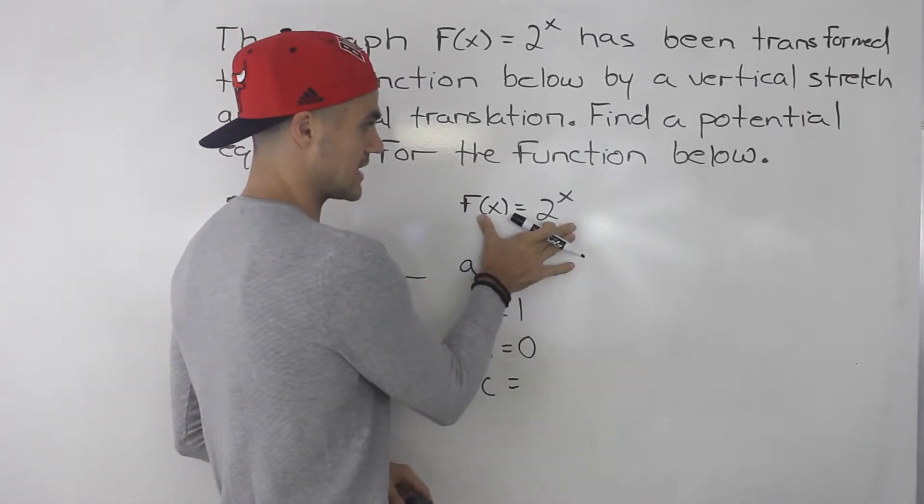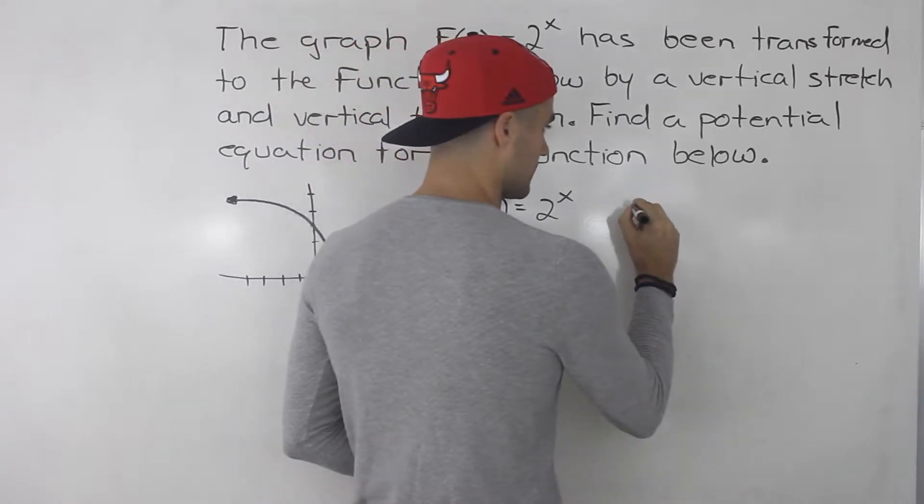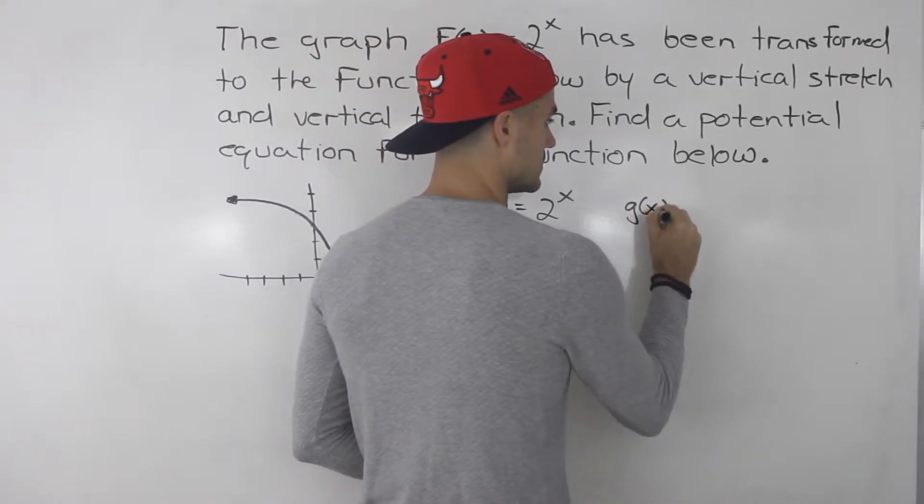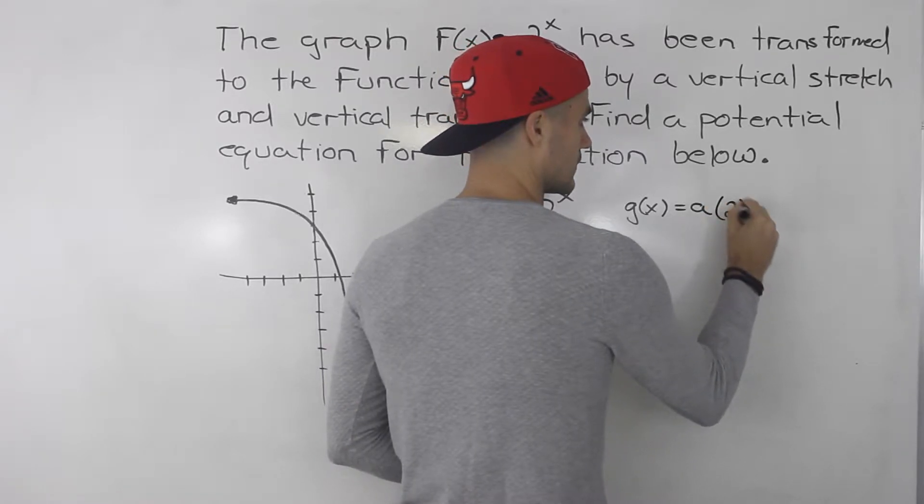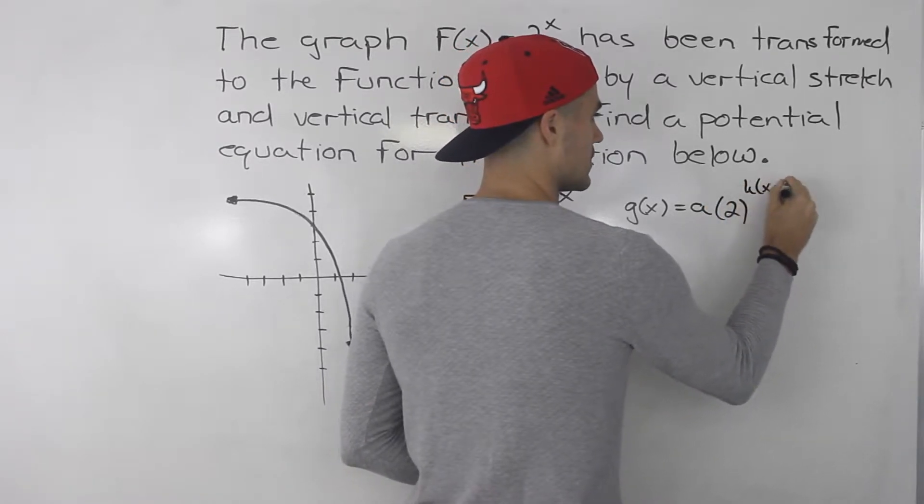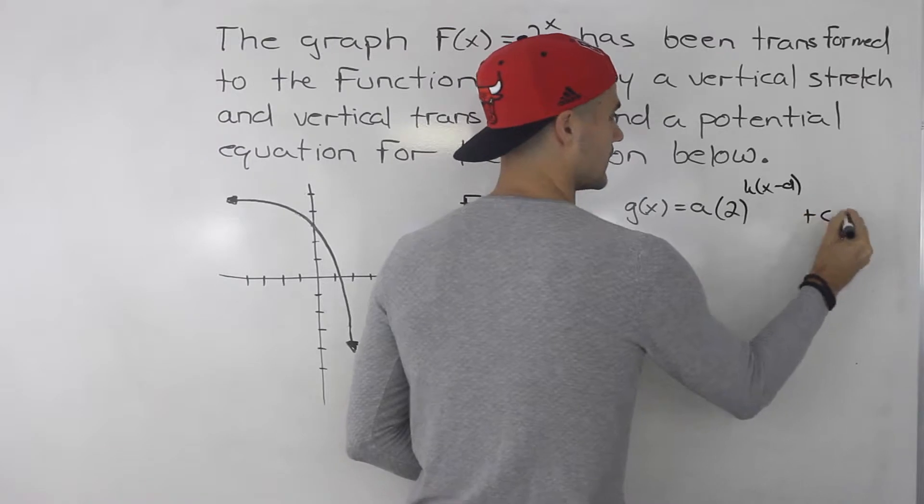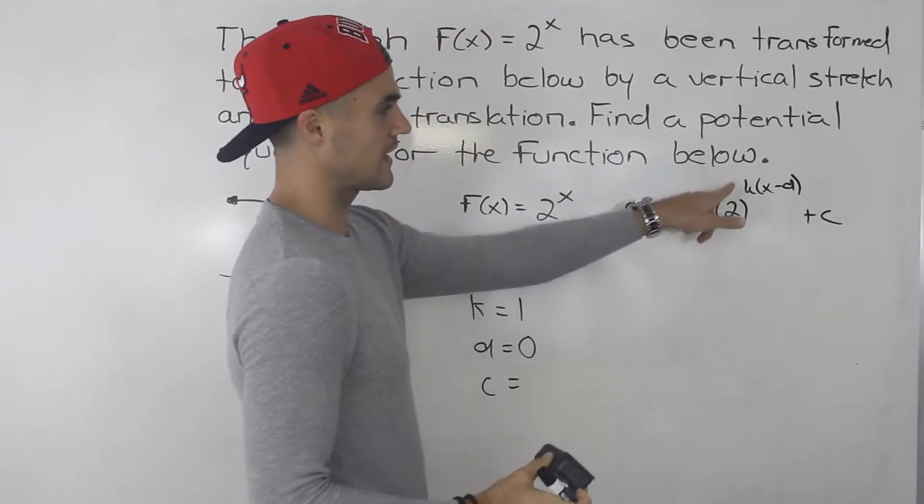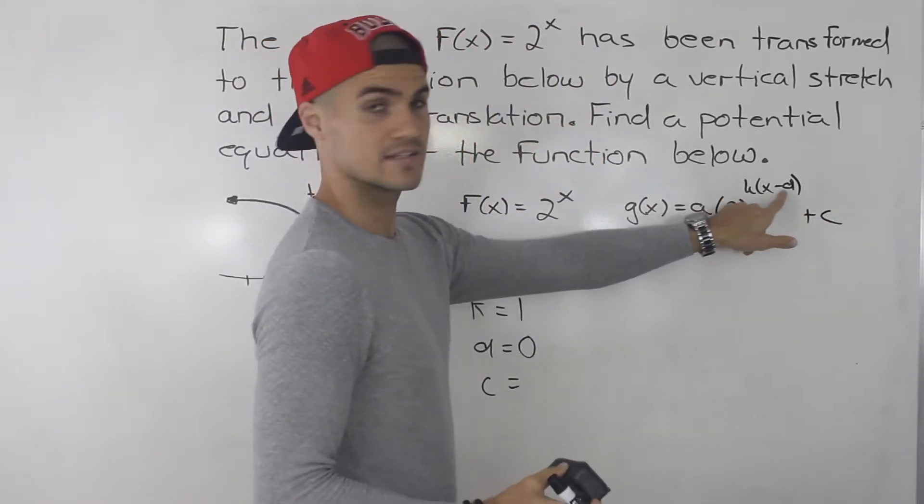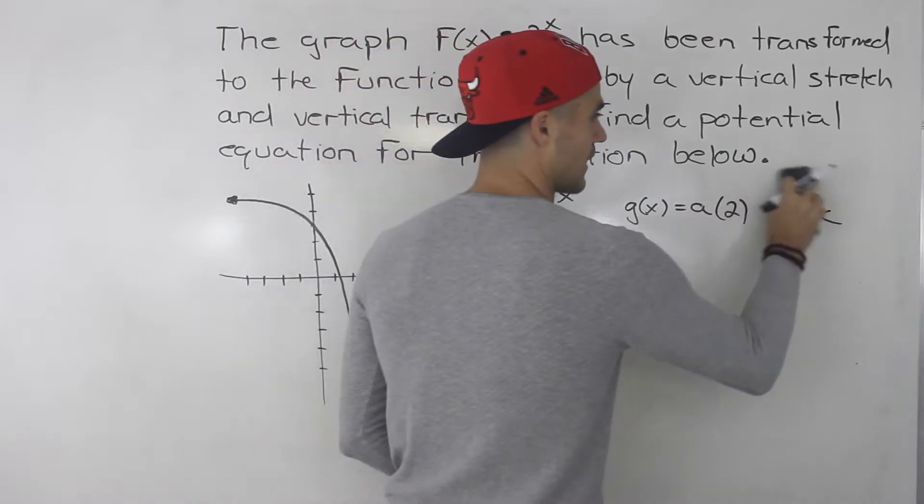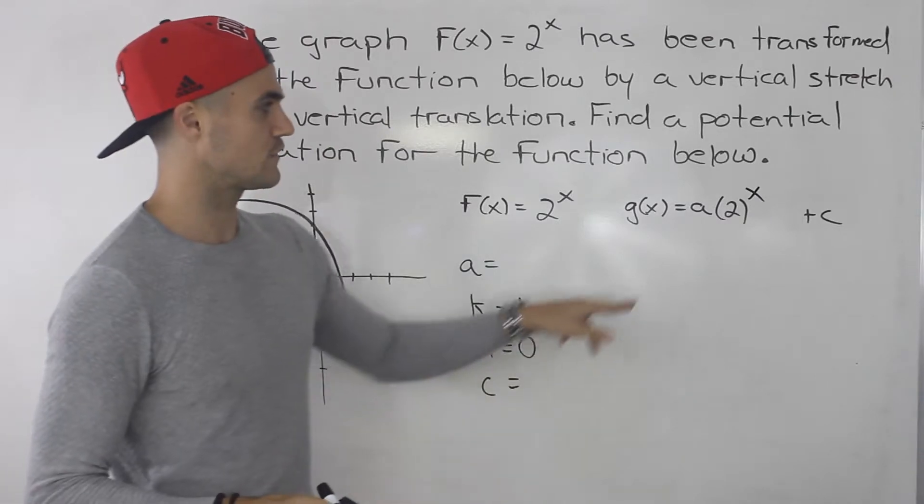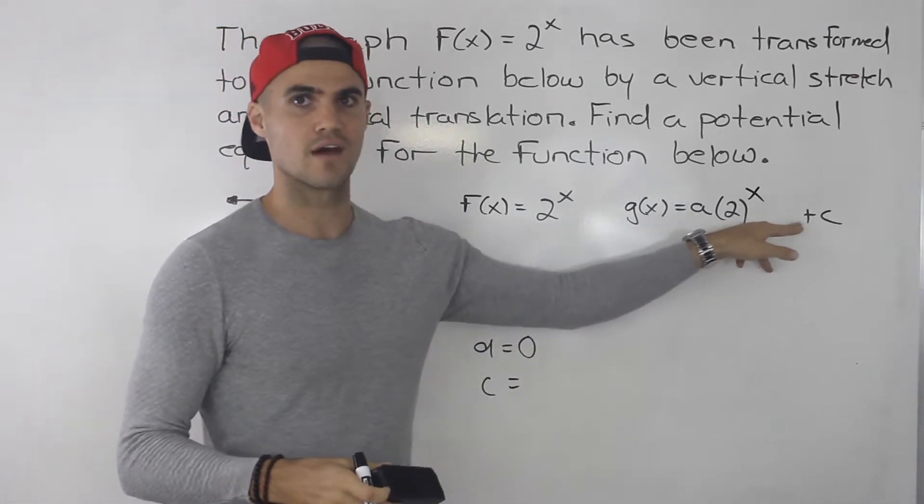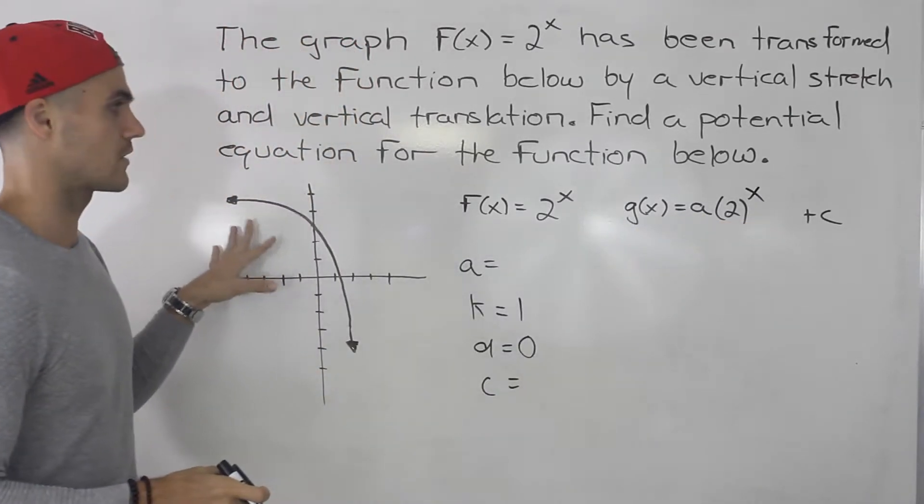Now, we know that if we take this function, transform it, it's called g(x), the general transformation format is going to be this here. But because we know the k value is 1, the d value is 0, we can just leave x as the exponent. So really, we just have to figure out what that a value, what that c value is from this diagram here.